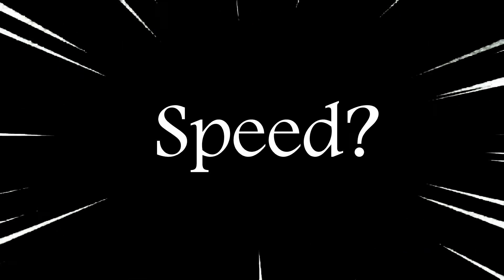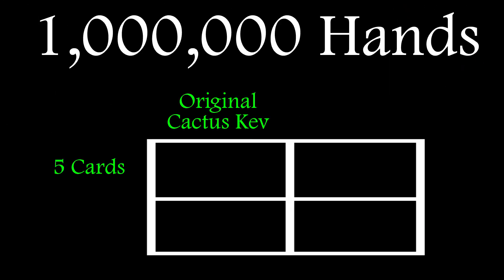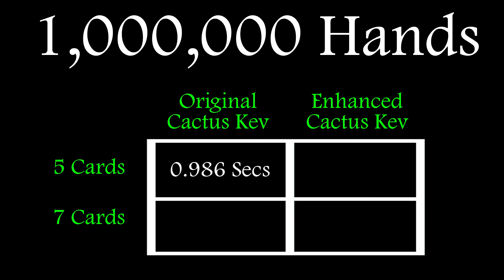So just how fast is it? Well, checking it by getting it to rank one million hands gives us some benchmark numbers for the original routine. Under a second for five cards and just over 1.6 seconds for seven cards. Not too shabby, but it won't be setting any records. 2 plus 2 and Sneezy 7 are 100 times faster, but they also use fancy hash functions and enormous lookup tables.